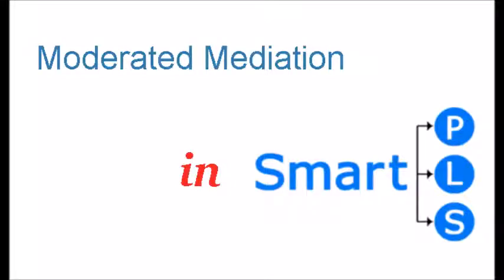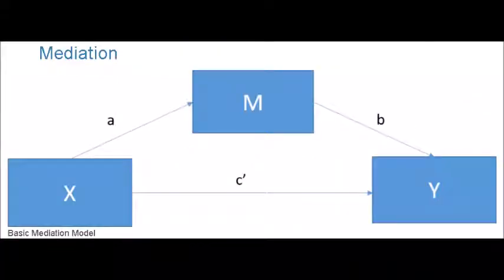Hello, today I'm going to guide you on how to conduct moderated mediation in SmartPLS. Here is the basic mediation model. This model shows that X is predicting Y, whereas M is acting as a mediator between X and Y. It means that an effect is partially or fully passing through M, the mediating variable. The paths are: C path for the main effect, and paths A and B for the indirect mediational effects.